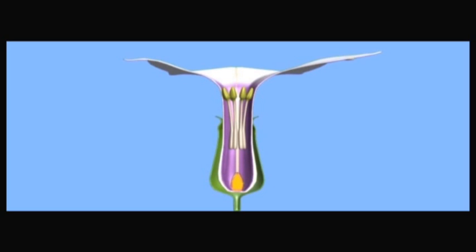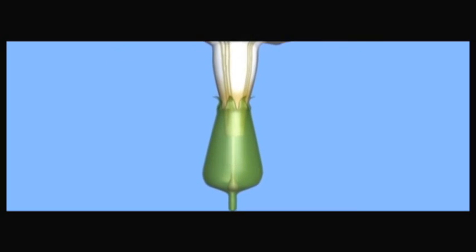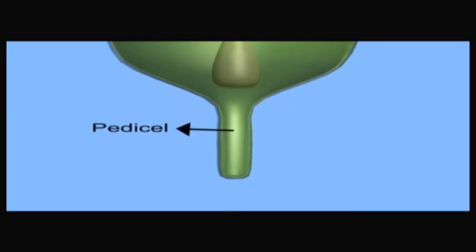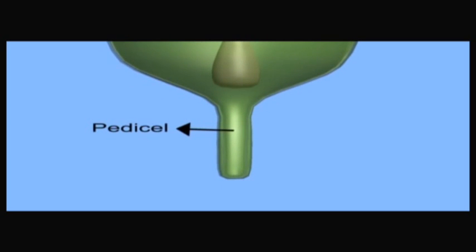We can see the datura flower has a small stalk at its base called the pedicel. Such flowers are called pedicellate flowers. Some flowers do not have the stalk or pedicel and are called sessile flowers.